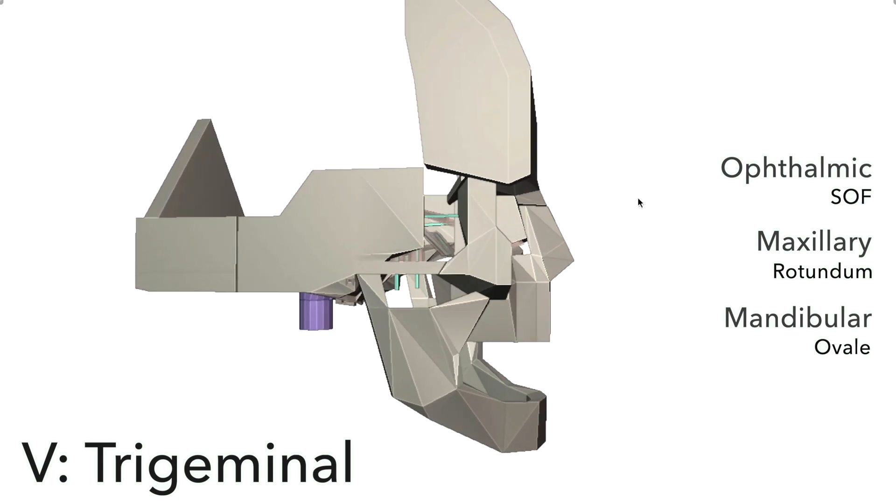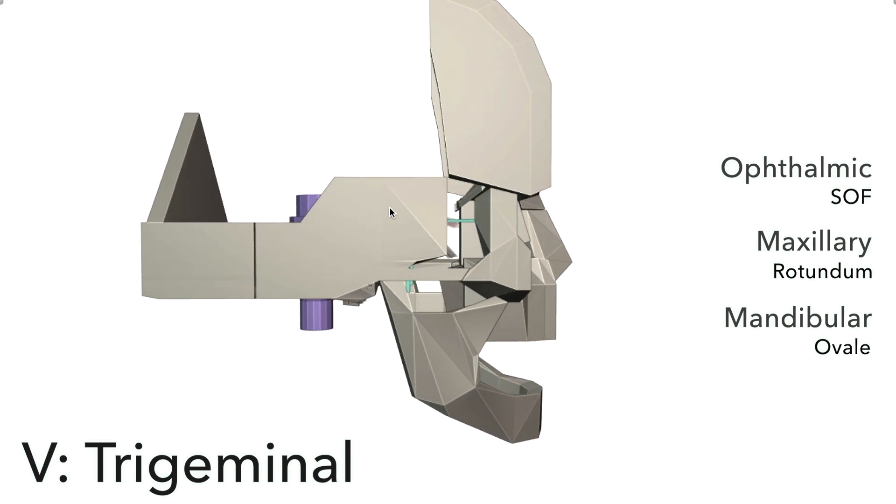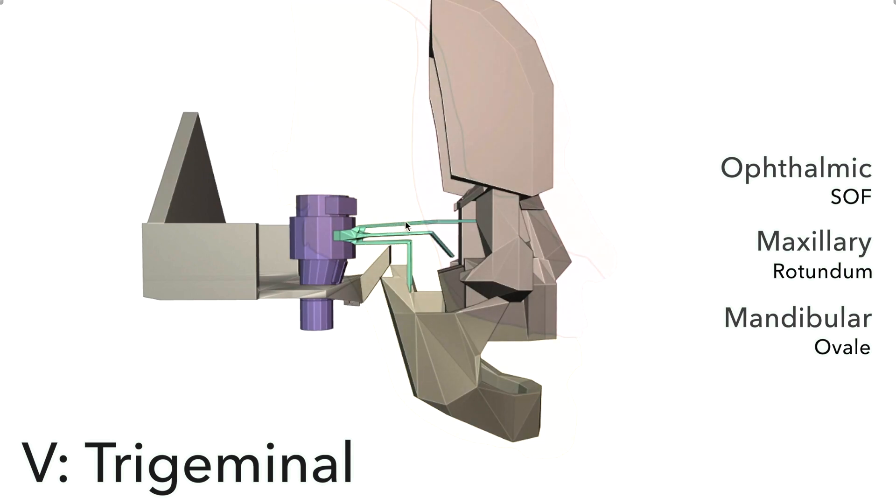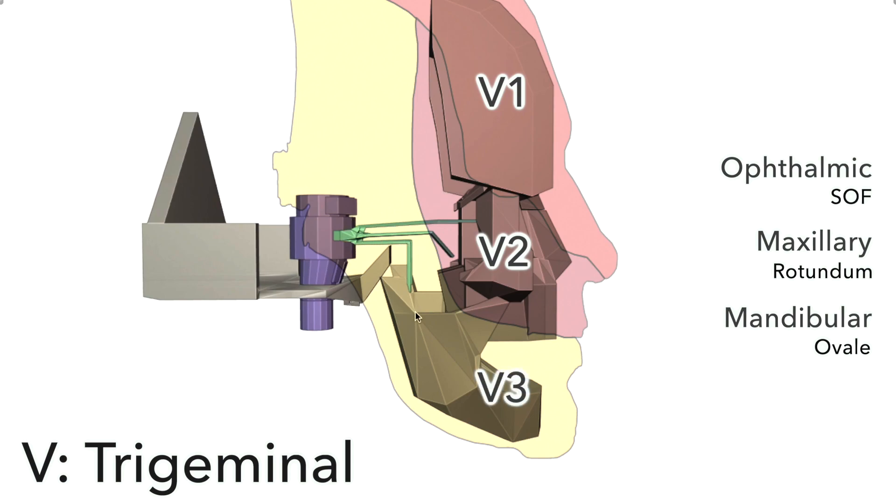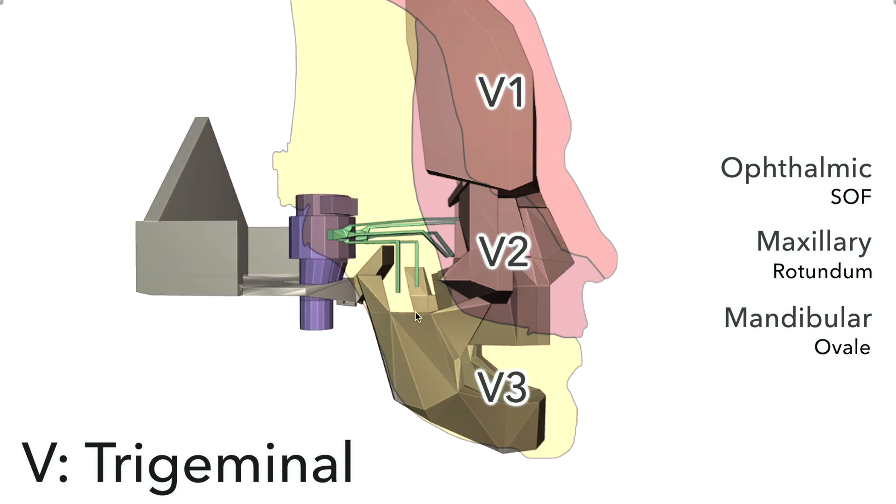Each of these branches of the trigeminal receive sensory information from a part of the face. The ophthalmic branch, aka V1, receives this portion of the sensory information from the face. The maxillary, aka V2, receives this part, and the mandibular, or V3, this portion. The mandibular branch also carries motor fibers to the muscles that we use for chewing.